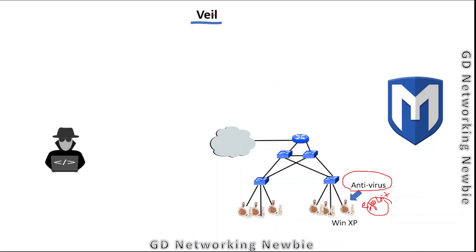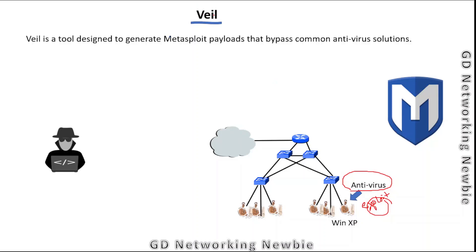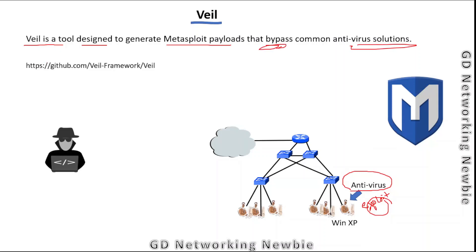To solve that issue, we have this framework. In that framework they provide a tool called Veil. Veil is a tool designed to generate a Metasploit payload that can bypass common antivirus solutions — that is its purpose. Further detail is available on the website which I'll show you in a moment.